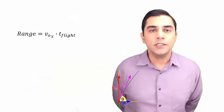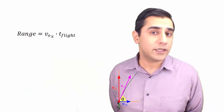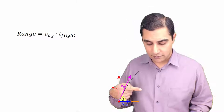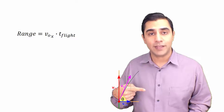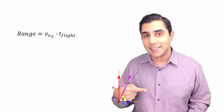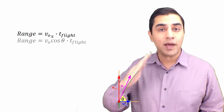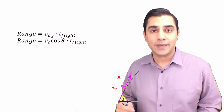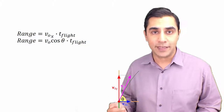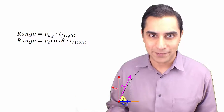To make that more clear, let's work on some generalized math. As you can see from this formula, range is simply the horizontal velocity times the time of flight. Because v₀x, the horizontal component of velocity, is the side of the right triangle adjacent to angle theta, it equals the hypotenuse — the overall velocity vector — times the cosine of theta. If you didn't follow the trig, I'll be making a video on trig.